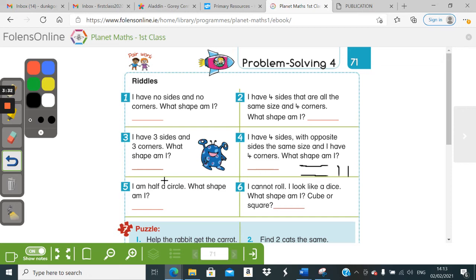Five. Oh, I think I might have given this one away already earlier. Well, maybe you didn't hear me. I am half a circle. What shape am I?